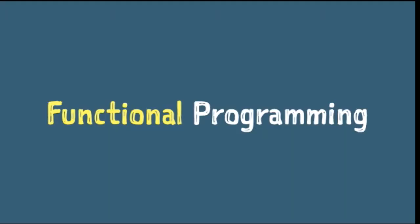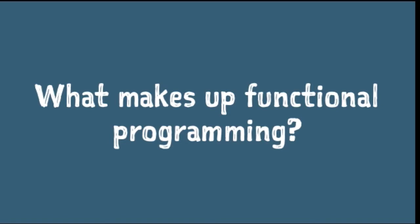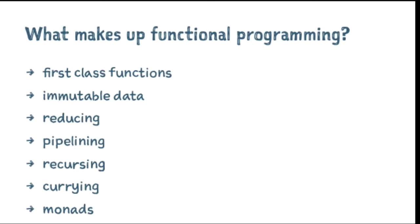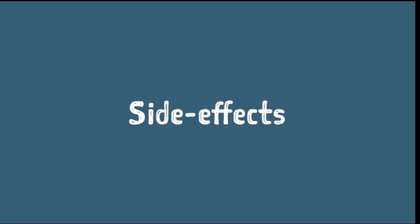So, aside from DSLs, functional programming is another paradigm that promotes declarative programming. It's where we program with expressions. When people talk about functional programming, they often mention characteristics like first-class functions, immutable data, reducing, pipelining, recursion, and currying. But I think functional programming can be summed up by one thing: side effects, or the absence of them. It's where we don't rely on data outside of the current function, and we don't change data that exists outside of the current function.